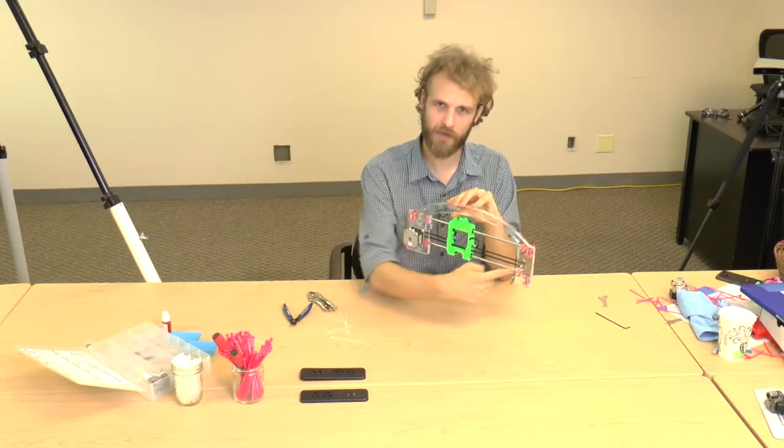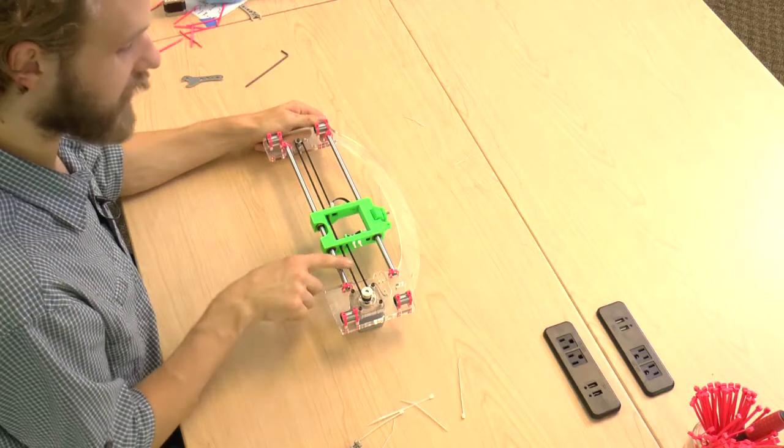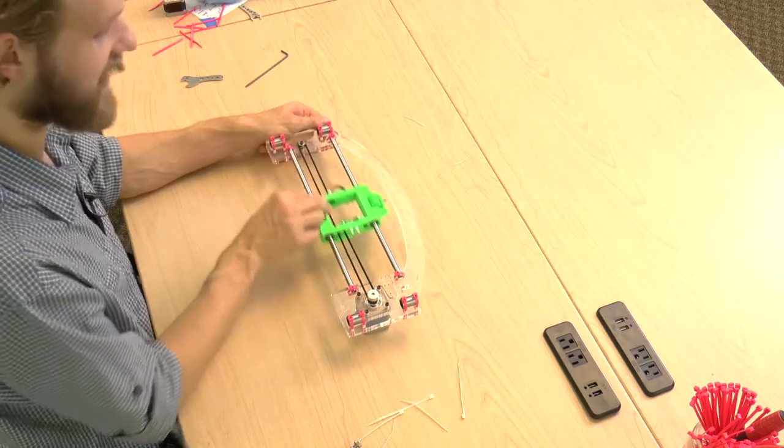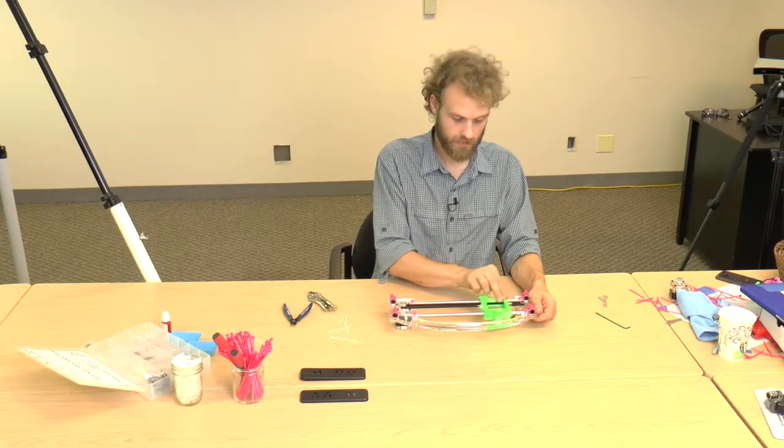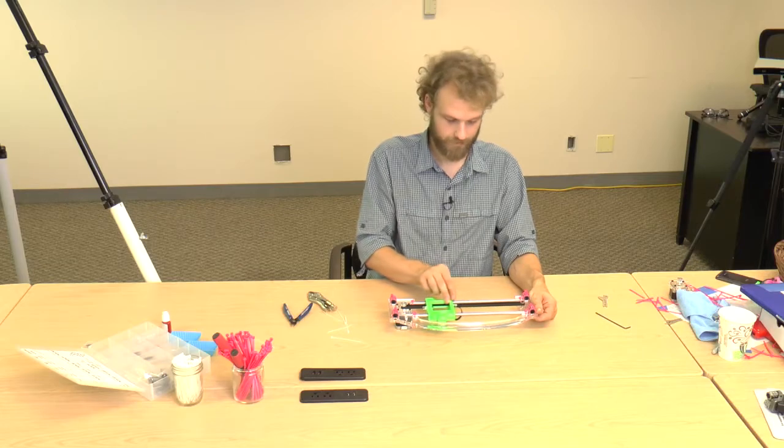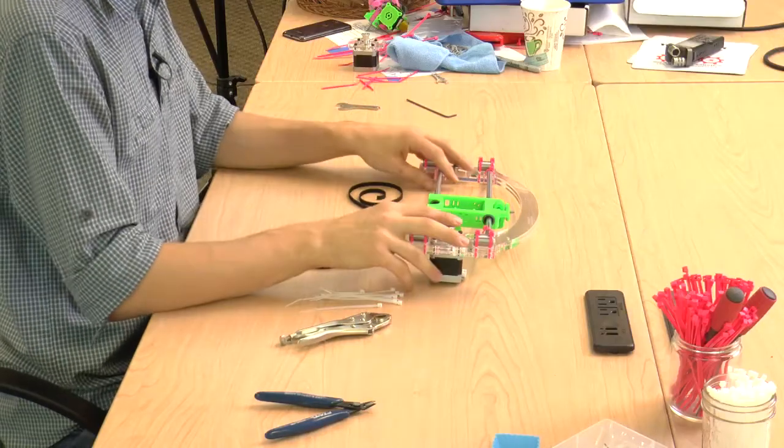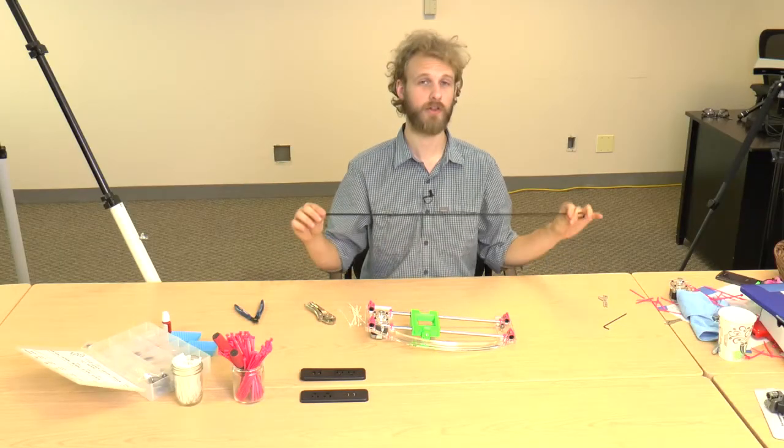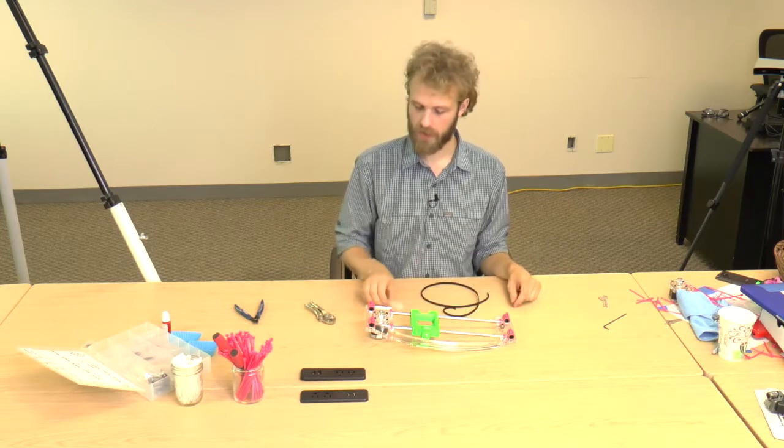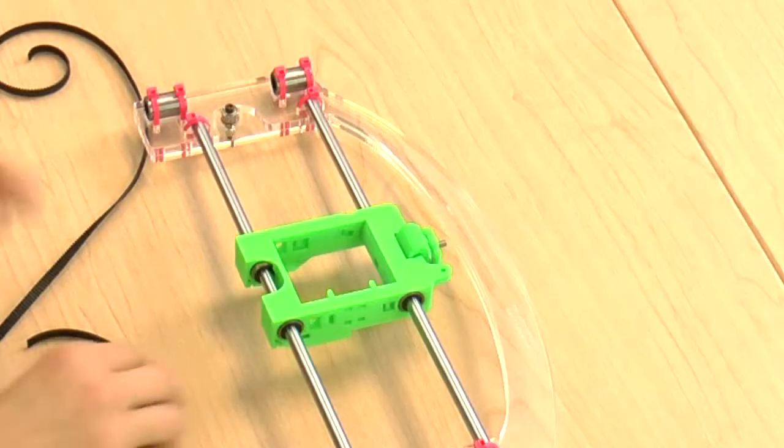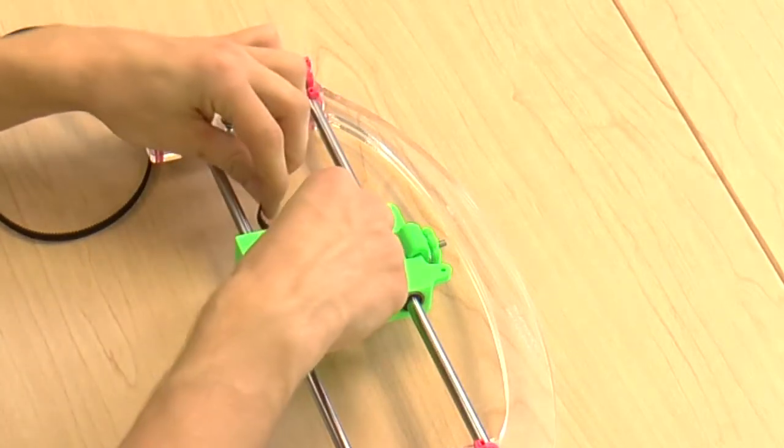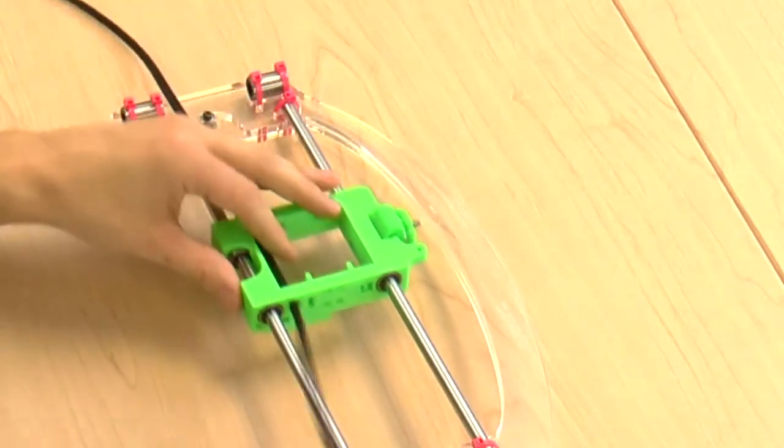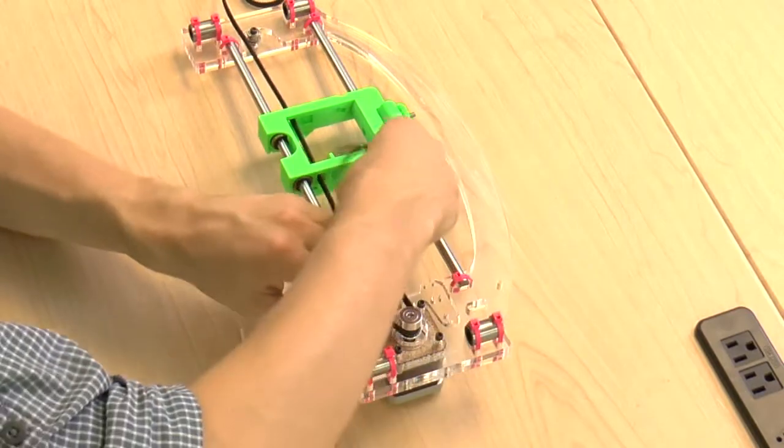The next step is to thread the X belt through the X assembly. The belt transfers the rotational motion of the motor into the linear motion along the X axis. You will need the X assembly, the X belt, there are two belts in your kit. One of them is marked X, it's a longer one, and one of them is marked Y, and a bunch of small 4-inch zip ties. Start by threading the X belt teeth up through the two quite big holes in the bottom of the X carriage. And round the belt around the X pulley.